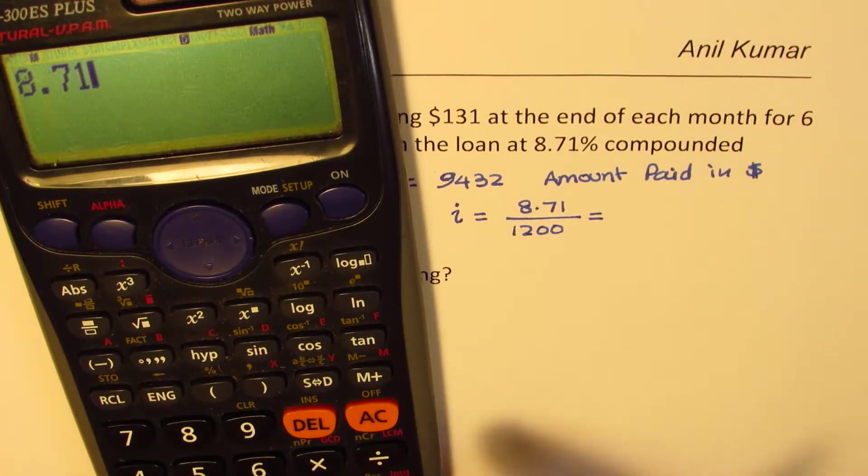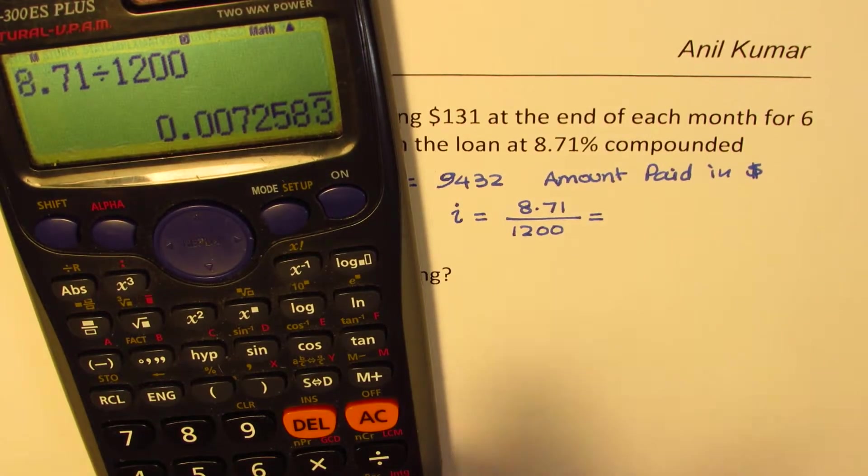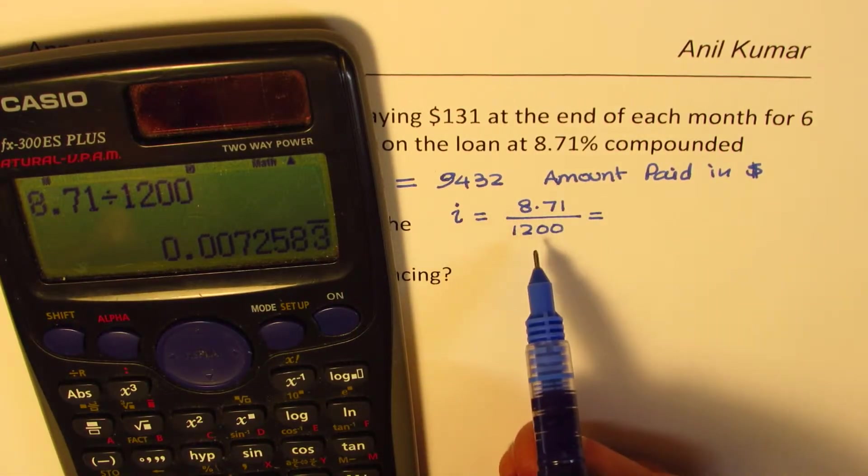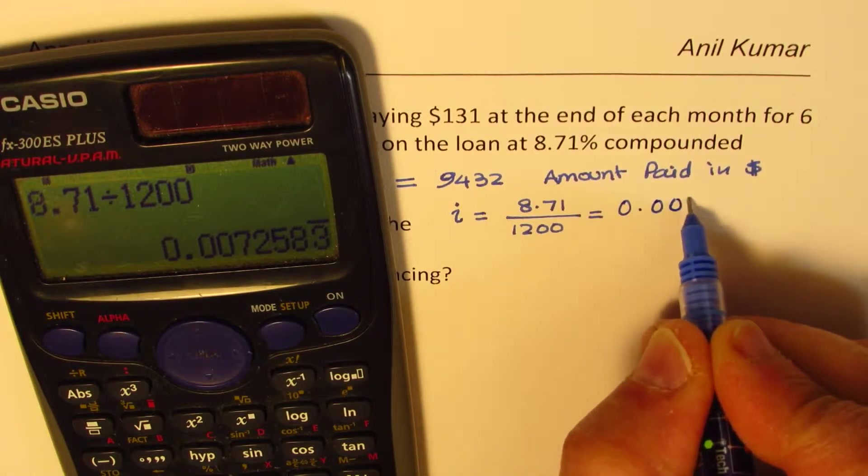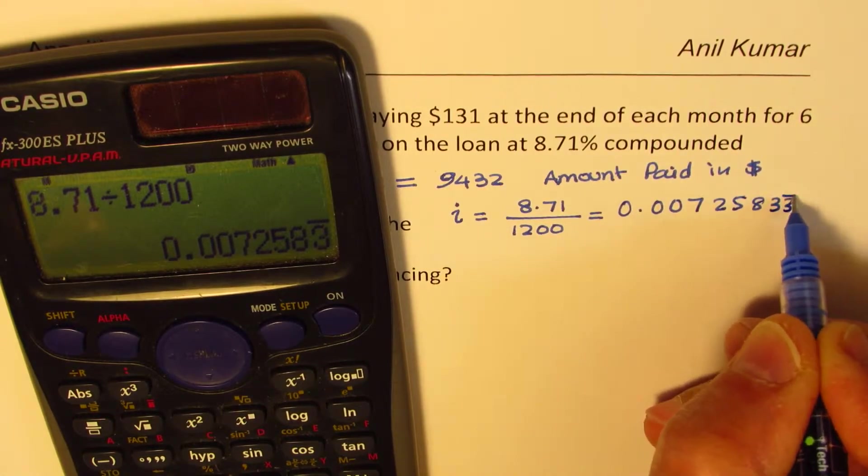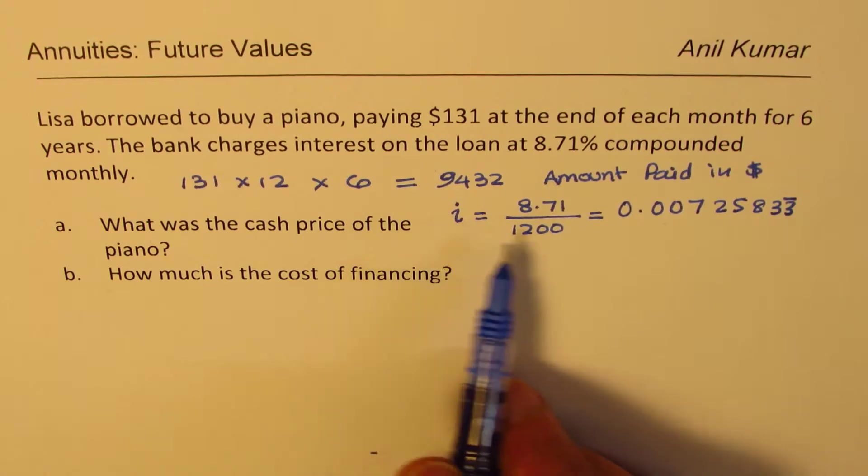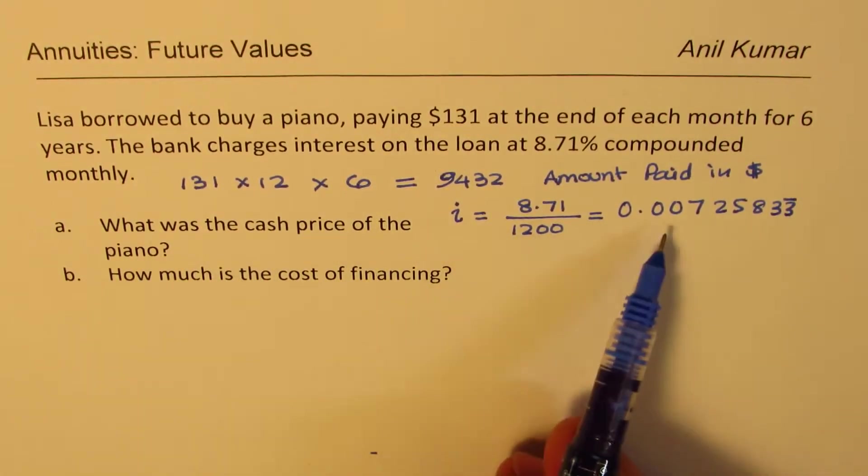So let's figure this out. 8.71 divided by 1200, which is in decimals. Well, we see a recurring number here, 333, so we'll rather use the fraction itself, right? It seems to be 0.00725833. That is the number. Anyway, so that becomes the interest rate, right? And this is monthly interest rate, okay?